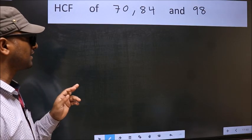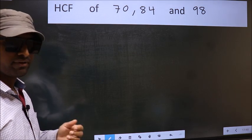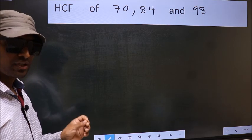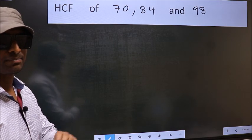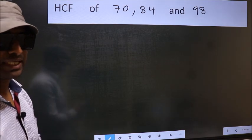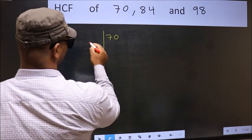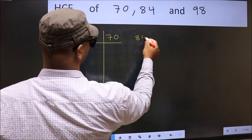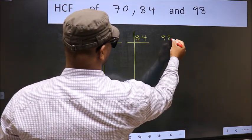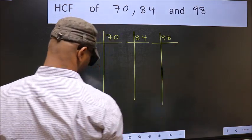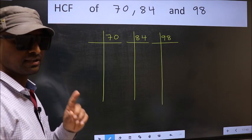HCF of 70, 84, and 98. To find the HCF, we should do the prime factorization of each number separately. That is: 70, 84, 98. This is your step 1.